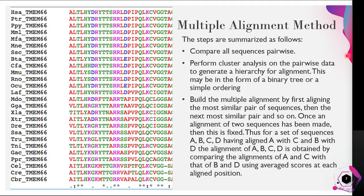In the multiple alignment method, the sequences are compared and a cluster analysis is performed on the pairwise data to generate an alignment, which may be in the form of a binary tree or a simple linear arrangement. The alignment proceeds by first aligning the most similar pairs of sequences, then the next most similar pairs, and so on. Once the alignment of two sequences has been made, it is fixed. Thus for a set of sequences A, B, C, and D — having aligned A with C and B with D — the alignment of A, B, C, D is obtained by comparing the alignment of A and C with that of B and D.